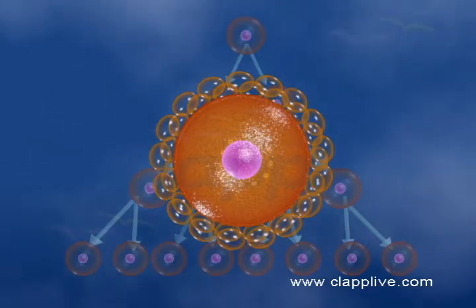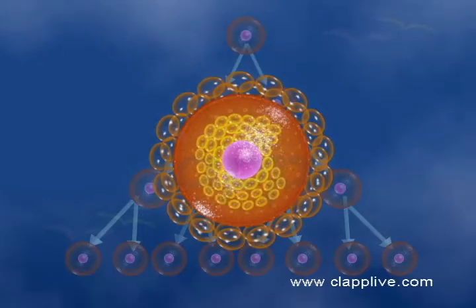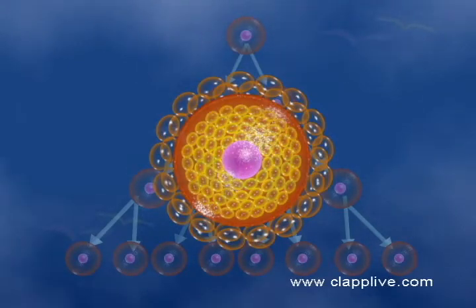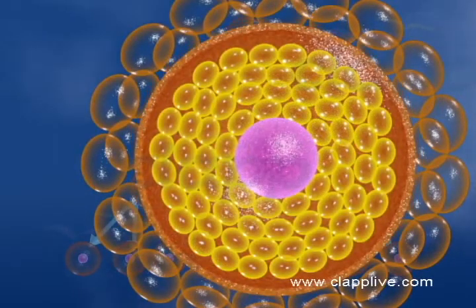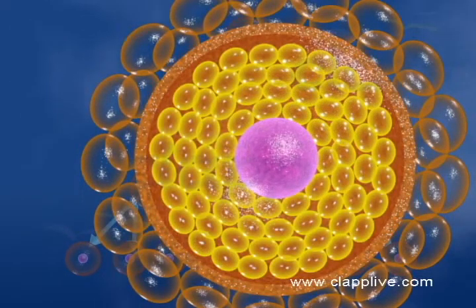With the onset of puberty, the primary oocyte becomes larger in size. More layers of granulosa cells surround the primary follicle and a layer of theca is formed around it. Such a structure is called a secondary follicle.